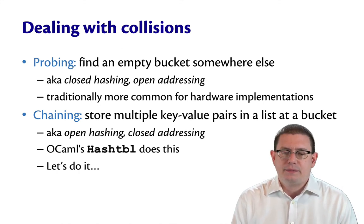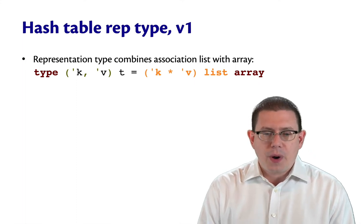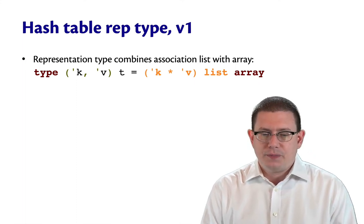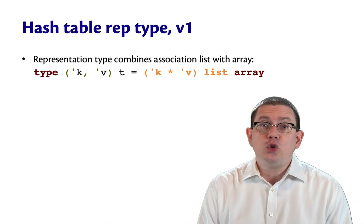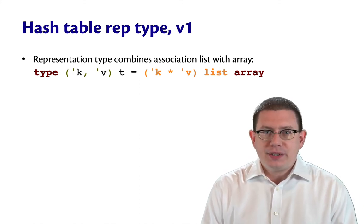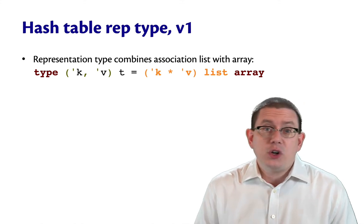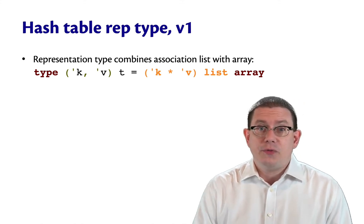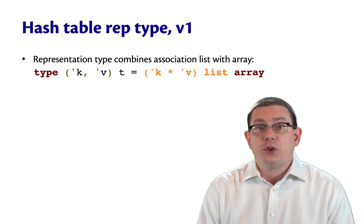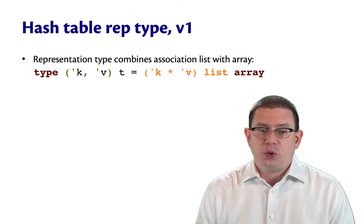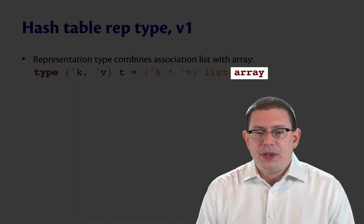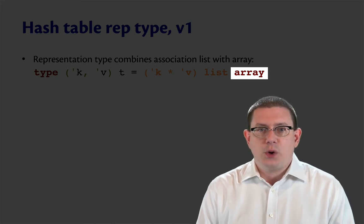So let's start off with our representation type for hash tables by combining the two types that we had already for direct address tables and for association lists. And now you know why I've showed you both of those in detail before. It's because in order to understand hash tables, you need to understand both of those individually. So the representation type at its outmost level is going to be an array, like a direct address table. So for each hashed key, we're storing some binding.